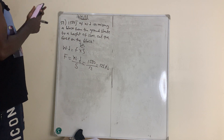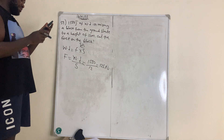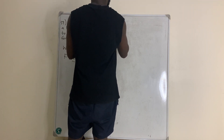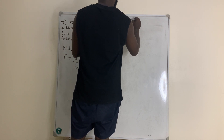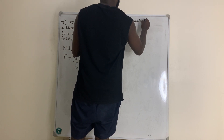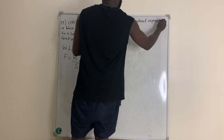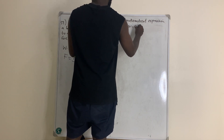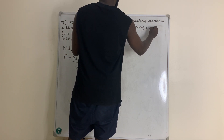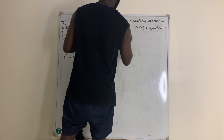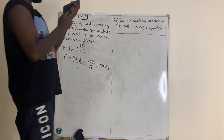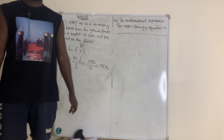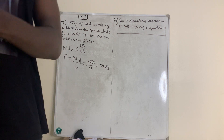Question number 60: The mathematical expression for the work-energy equation is — drop your answer in the comment section. I'll be waiting for your answer. Thank you very much for watching. Please like, share, and subscribe. Bye-bye.